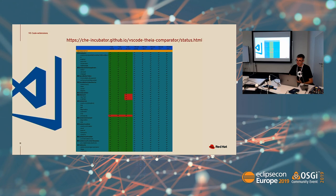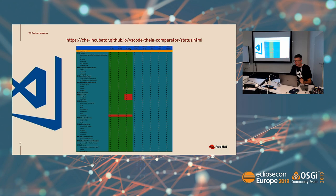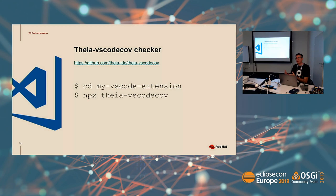Now the status of VS Code extension support in Che. We have a website where you can compare all the VS Code API and what is implemented by Theia. When it's red, it means it's not implemented. When it's green, it's implemented — maybe with some bugs, but implemented. For example, the clipboard was not implemented in Theia 0.10, but in the new version it has been implemented. You can browse and follow all the API.